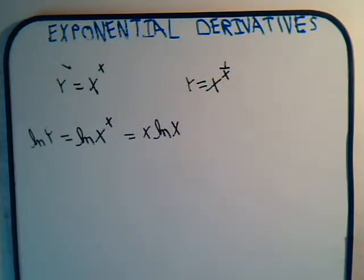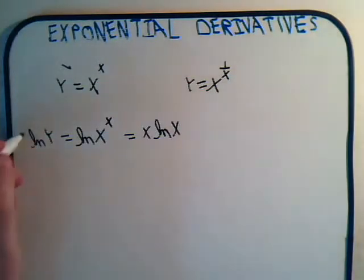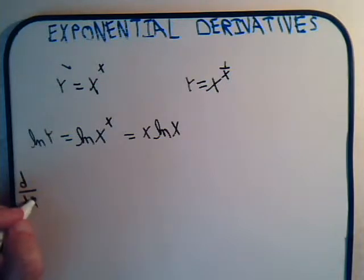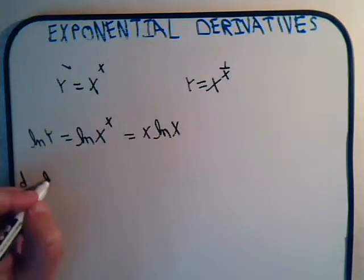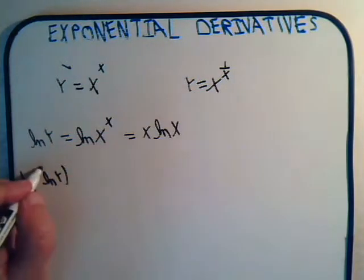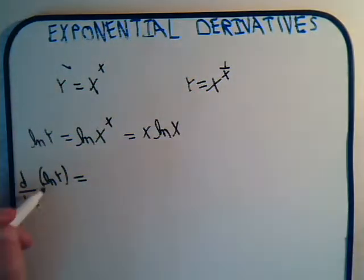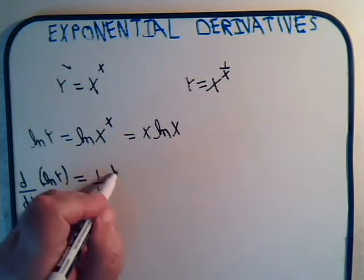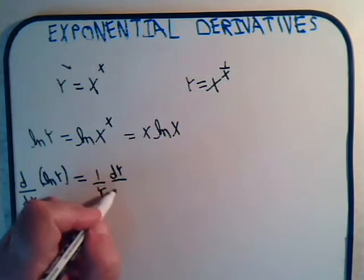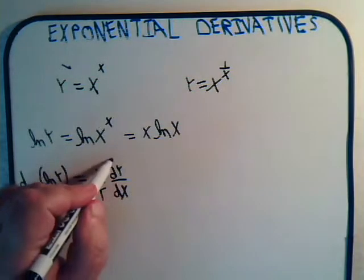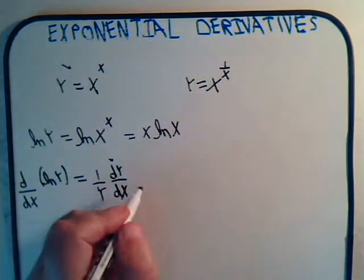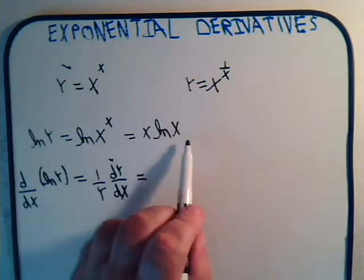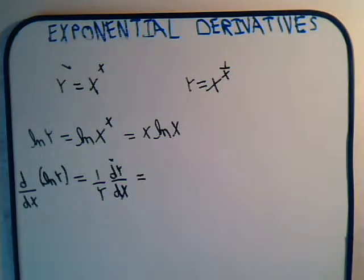Now we can take derivatives of both sides of this equation. The derivative with respect to x of the natural log of y, using our logarithmic differentiation technique, is just 1 over y times dy/dx. This is what we want to solve for.